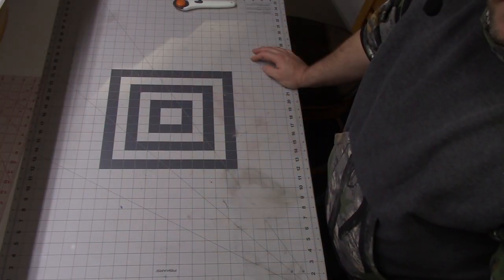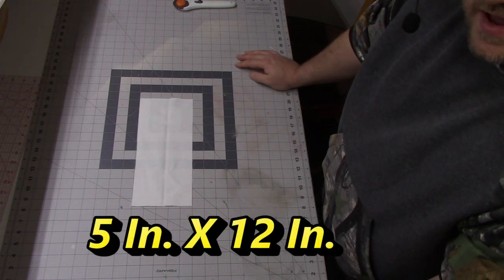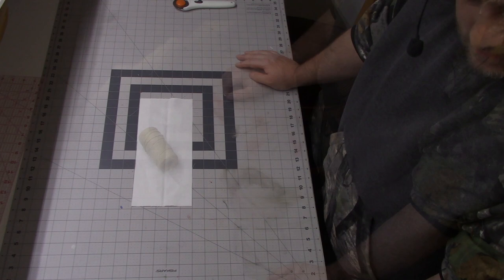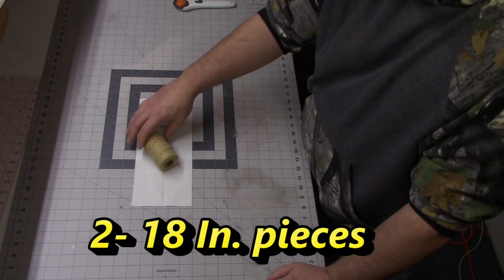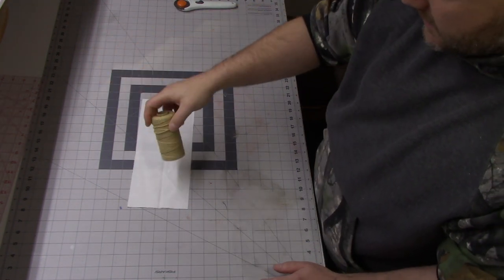The things you need to make this simple treat bag are one piece of fabric of your choice that measures 5 inches by 12 inches. You're going to need something for your drawstring. Today I'm going to just be using this cord. You could also just use ribbon or anything like that.